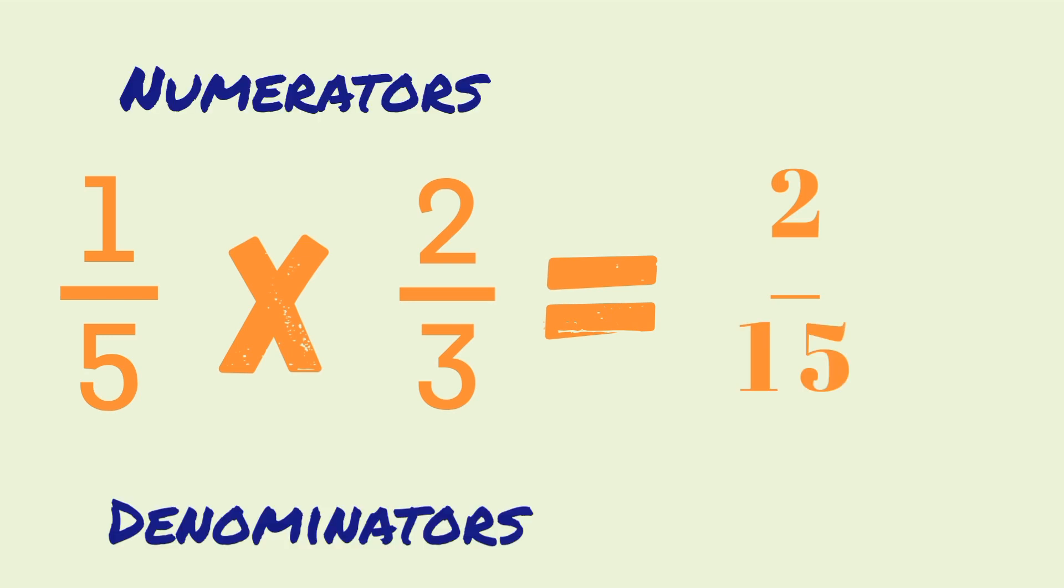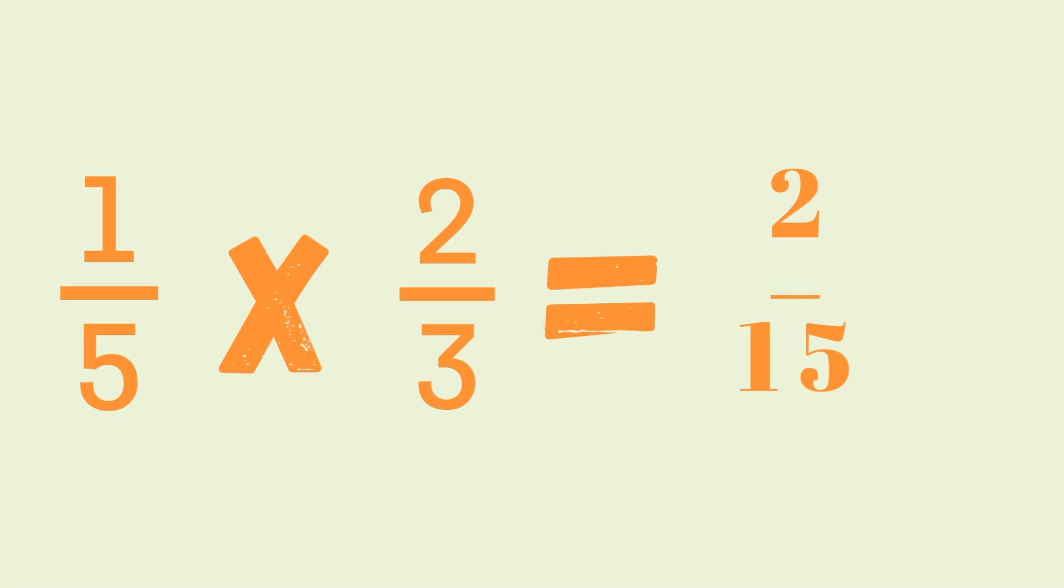Okay, the top numbers are the numerators and the bottom numbers are the denominators. So 1 times 2 is 2 and 5 times 3 is 15. So the answer is 2 fifteenths.